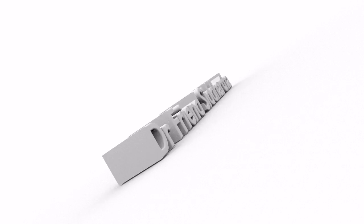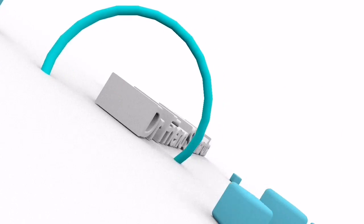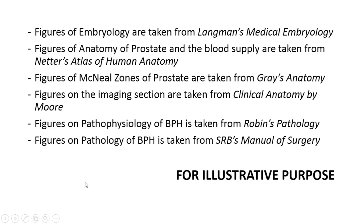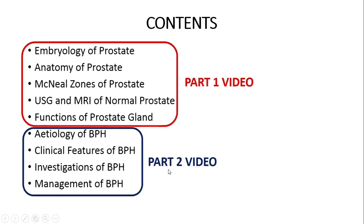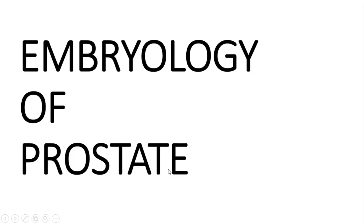In this particular topic we'll deal about the embryology of the prostate, then we'll talk about the anatomy of the prostate. Various confusions which are present in McNeal zones — I will try to make them as clear as possible. Then we will see some of the USG and MRI pictures of the normal prostate gland, then we'll talk briefly on the functions of the prostate gland. On the clinical aspect we will deal about the BPH etiology, clinical features, investigations, and management — in particular, I'll talk about the TURP and its consequence, TURP syndrome. Since it is a long topic, I am trying to break this video into two parts: the first will deal with basic concepts and the second with clinical concepts.